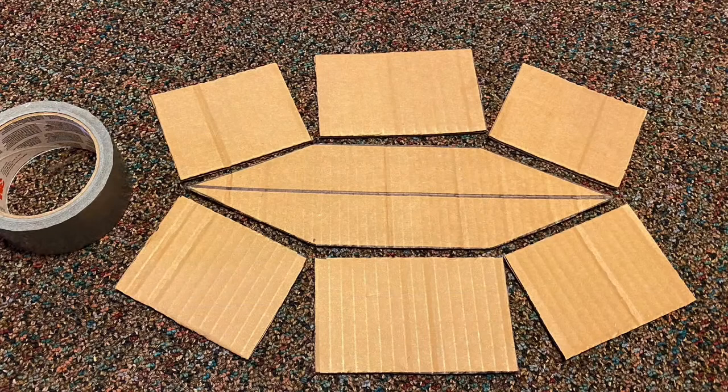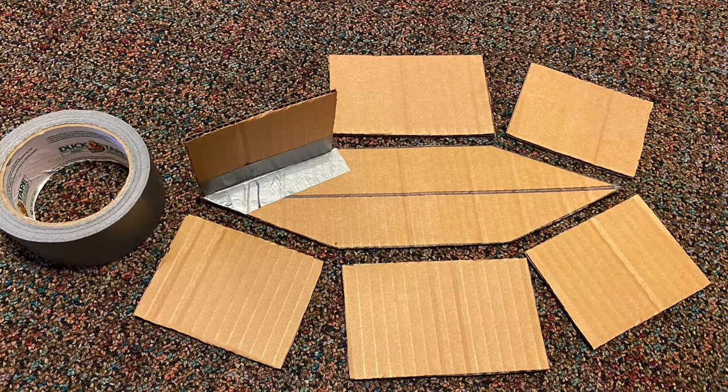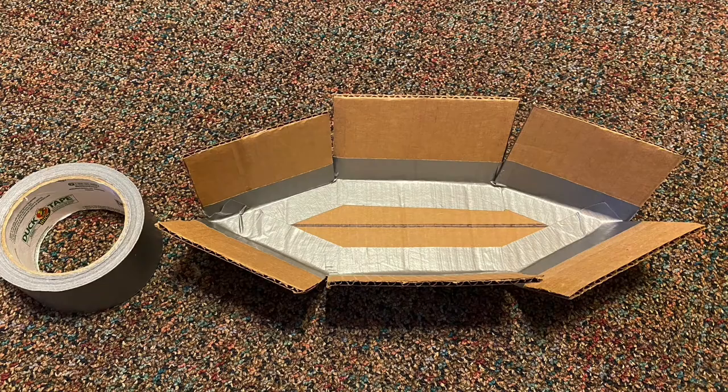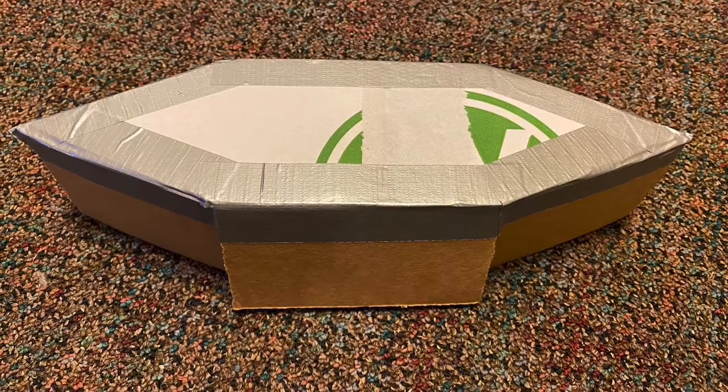My next step was to lay out my cardboard and figure out how I wanted to tape it together. Here I used duct tape to secure each edge of the boat to the base. Now that the inside is finished don't forget to tape the outside as well.